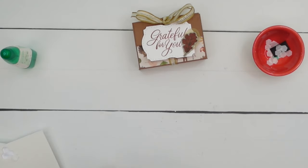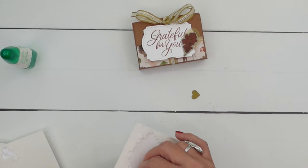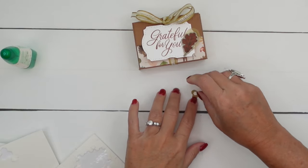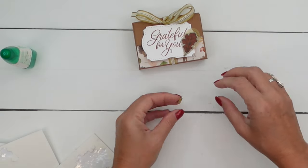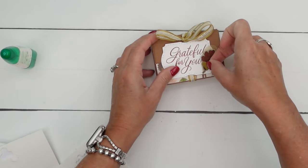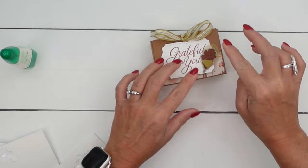And then last but not least, I cut out a little bitty heart from wild wheat. This is from the wonderful thoughts dies. Any heart that you have will work. If you have our old, give it a whirl dies. Those are my favorite.